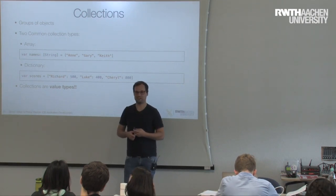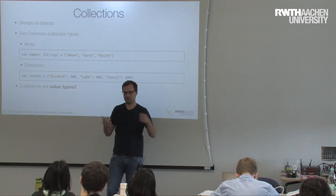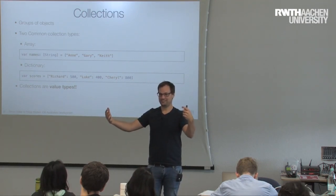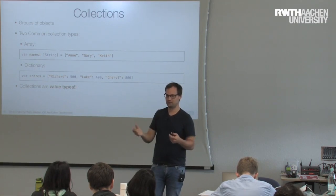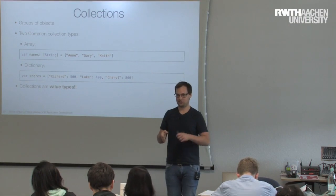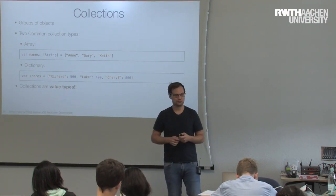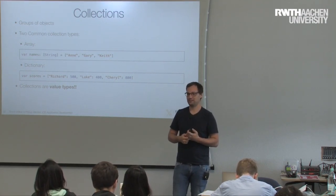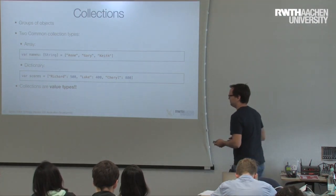One thing very different from many other languages: these collection types are value types, not references. If you have an array and create a new version of it and change something in one, it will not change in the other. This took me a long time to figure out coming from C and Objective-C, where you'd pass arrays around and they'd always be the same. In Swift, every time you create a new variable or pass an array, it's a copied version.